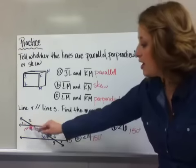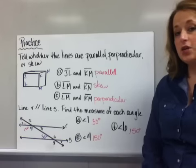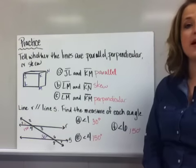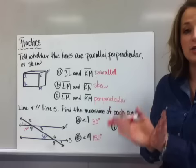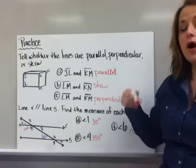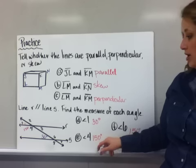Now for angle 4, directly underneath it. I know that it is 150 degrees because angle 1 and angle 4 are adjacent to each other. They form supplementary angles making a straight line. So I have to ask myself, what do I add to 30 to get 180 degrees and it's 150 degrees.